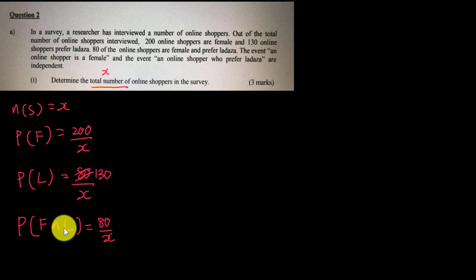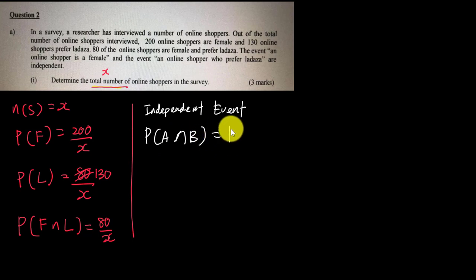We have a formula for independent events. If both events are independent, then P(A∩B) equals P(A) times P(B). This is the independent rule in probability. Since they are independent, the probability of female and prefer Lazada—you can write the intersection sign or use 'and'—equals P(F) times P(L).